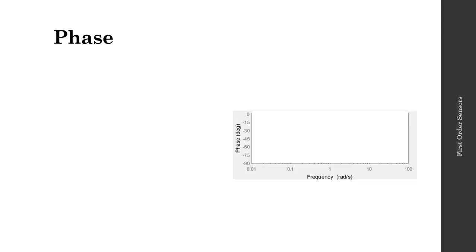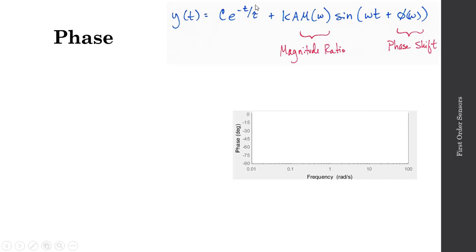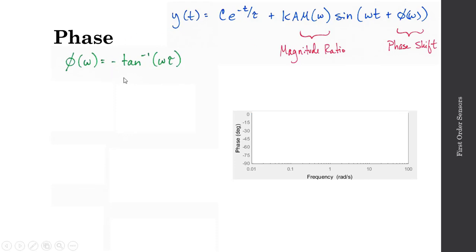Let's recall the time response of the first-order sensor, y of t. We had a transient component and a steady-state component. In the steady-state component we have both a magnitude ratio and a phase shift. Let's now take a look at the phase shift and see how it's affected by frequency, in the same way the magnitude ratio depends on frequency.